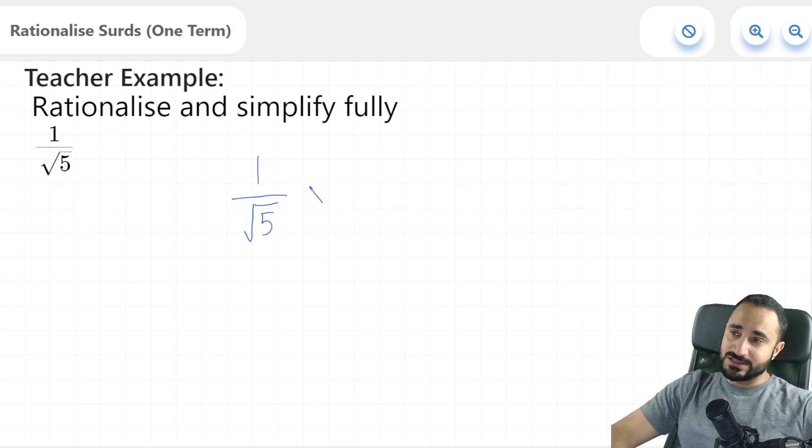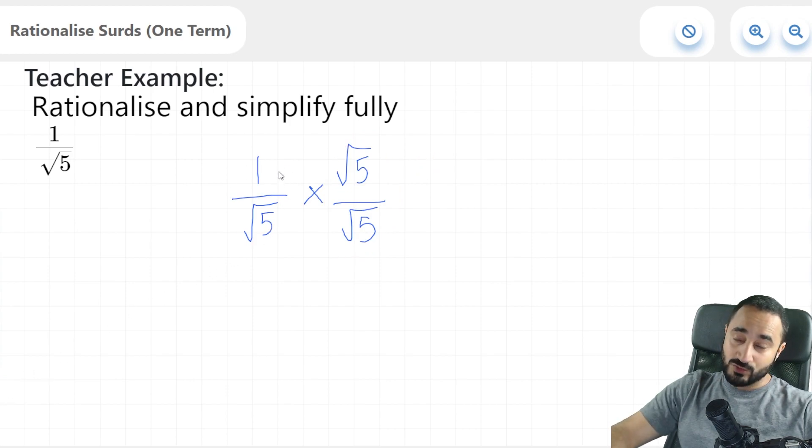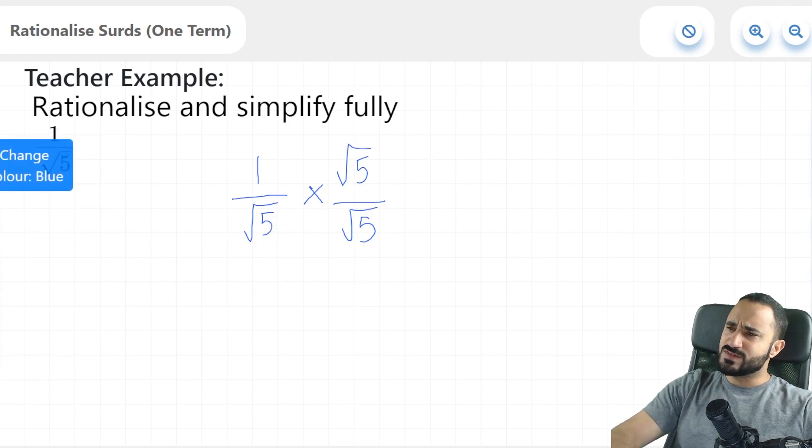So how do we go about doing this? Well, we're going to modify this fraction by manipulating the way it looks without changing its value. So I'm going to multiply this by 1, but not the 1 that you're thinking of. I'm going to multiply this fraction here by the denominator, this root 5. I'm going to multiply it by root 5 over root 5. And don't forget, any number divided by itself is just 1. So you are allowed to do this as it doesn't change the original value of the fraction.